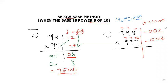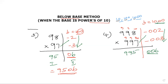Vertically multiply: 3 into 2 gives 6. Using the all-from-9 method, the zeros are already incorporated, so the second part is written as 006 (three digits for three zeros in the base). Cross subtract: 997 minus 2 gives 995. The base digit is 1, so no additional multiplication needed. The final answer is 995006.